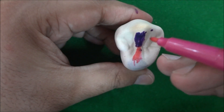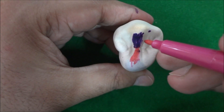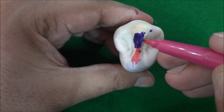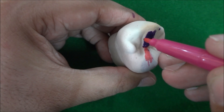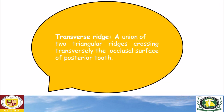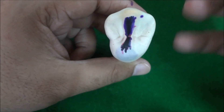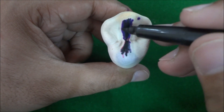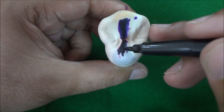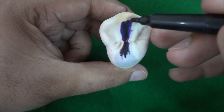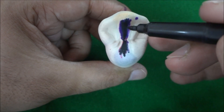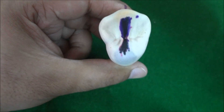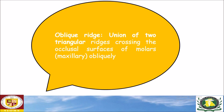These are known as triangular ridges because their slopes resemble the two sides of a triangle. A transverse ridge is the union of two triangular ridges crossing transversely the occlusal surface of a posterior tooth. The buccal triangular ridge and the palatal triangular ridge cross the tooth surface in a transverse direction, so collectively they are known as the transverse ridge.